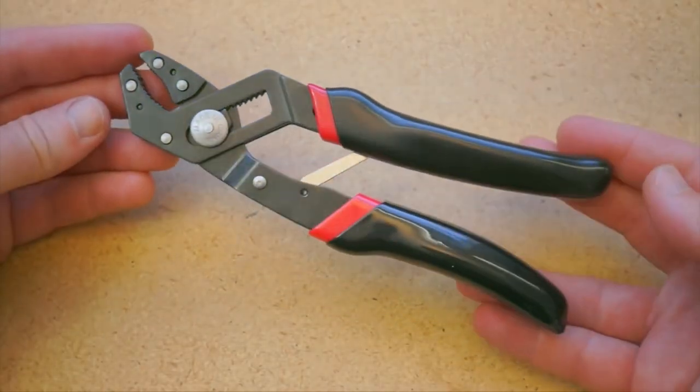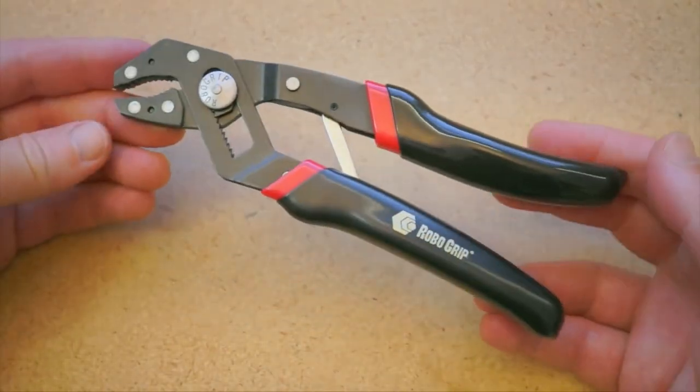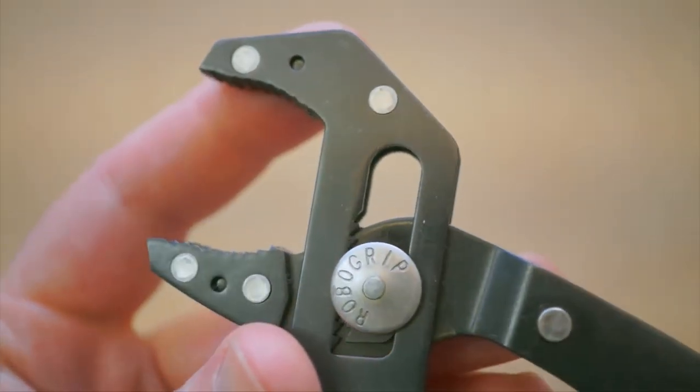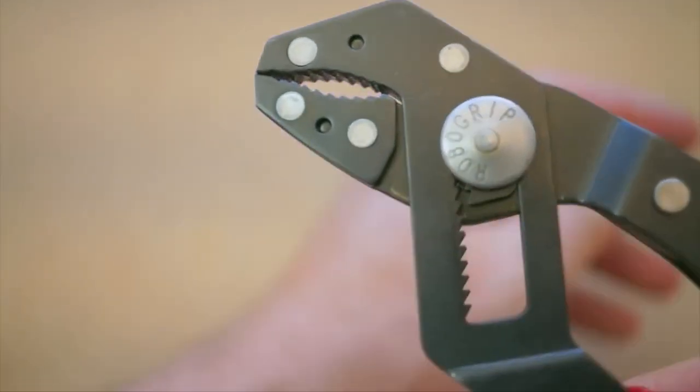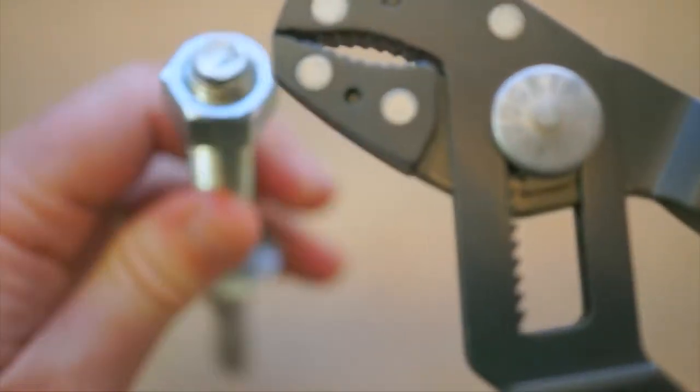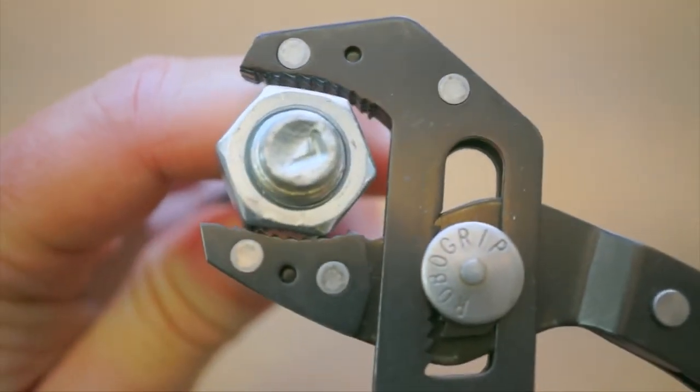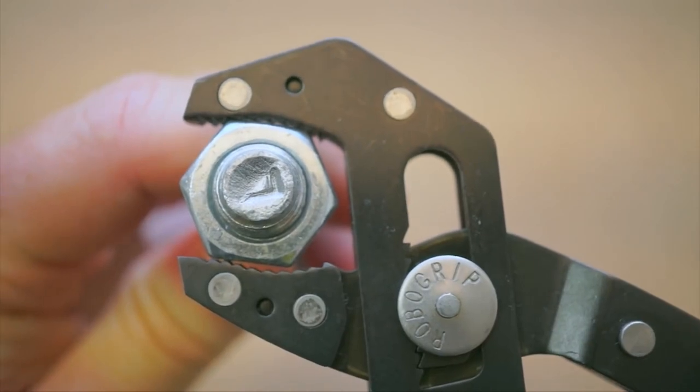The RoboGrip pliers are self-adjusting pliers you can use one-handed. The design ingeniously hugs the thing you're grabbing so that pressure is better distributed all around. You can see it happen as the front of the jaws first make contact and then the back pulls in to create a secure fit.